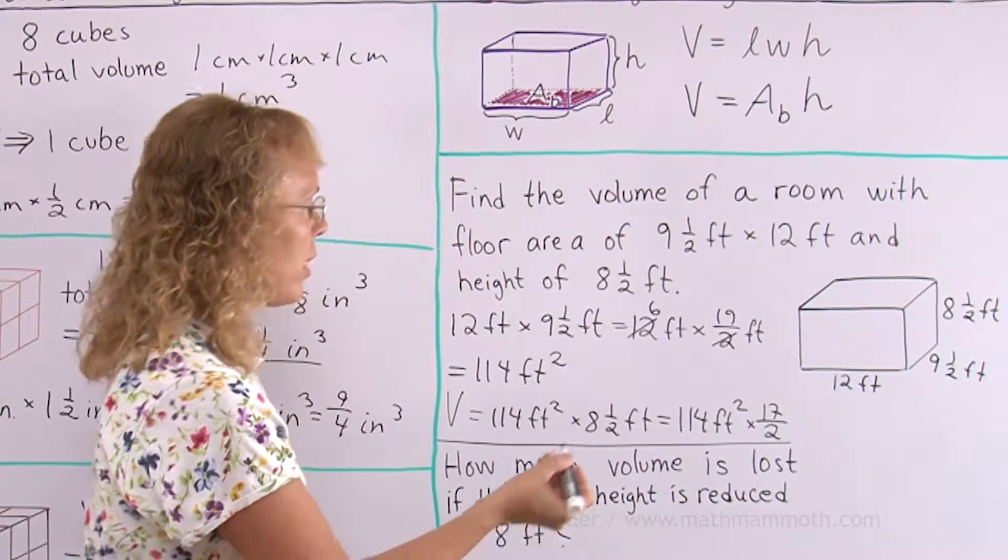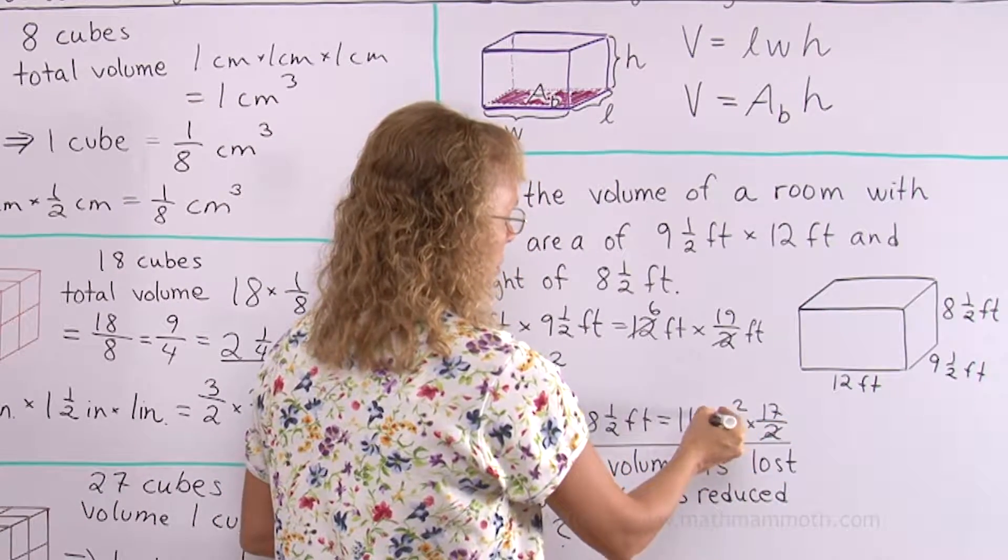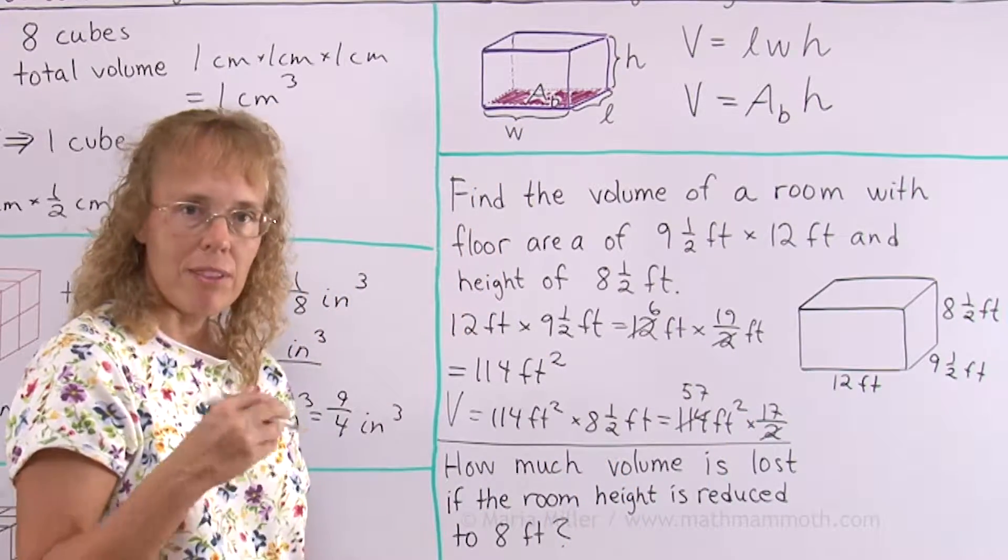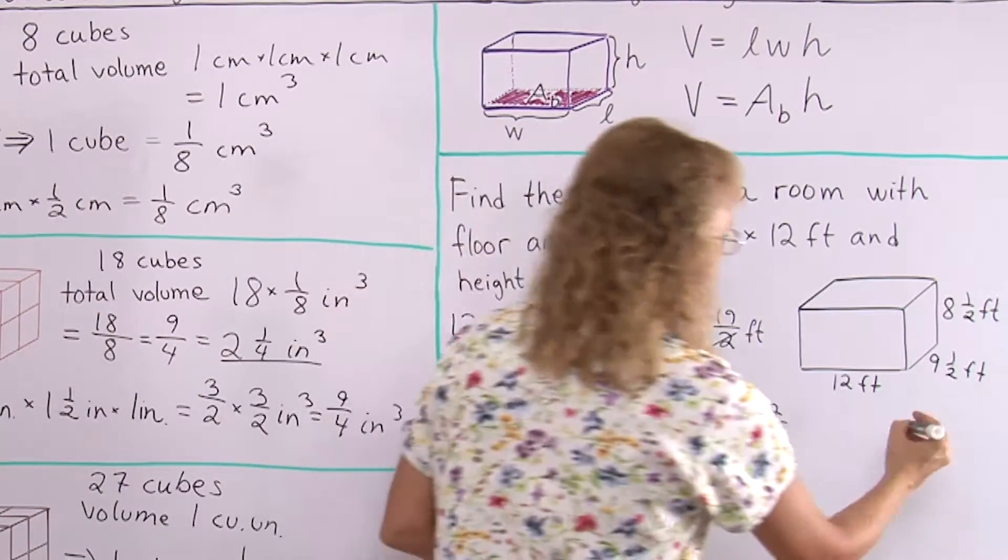Here I will simplify again. Take just half of 114, which is 57. And now we will multiply 57 times 17.